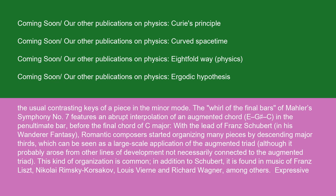The finale of Mahler's Symphony No. 7 features an abrupt interpolation of an augmented chord, E-G#-C, in the penultimate bar before the final chord of C major. Following the lead of Franz Schubert in his Wanderer Fantasy, Romantic composers started organizing many pieces by descending major thirds, which can be seen as a large-scale application of the augmented triad, although it probably arose from other lines of development not necessarily connected to it. This kind of organization is found in addition to Schubert in music of Franz Liszt, Nikolai Rimsky-Korsakov, Louis Vierne, and Richard Wagner, among others.